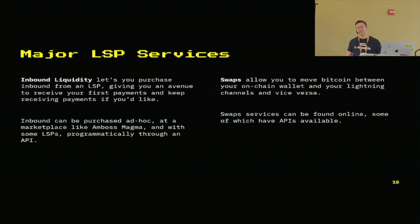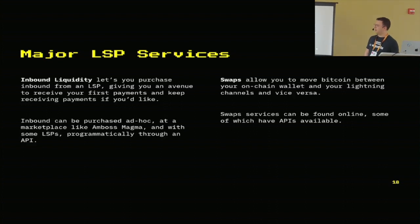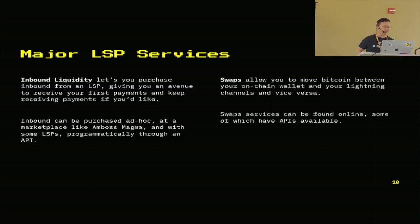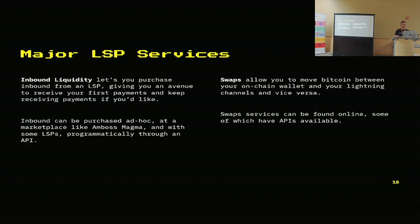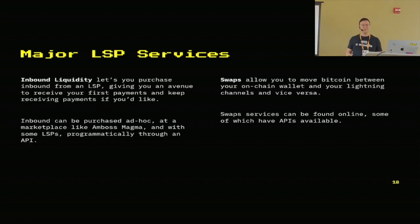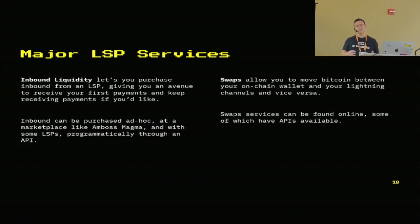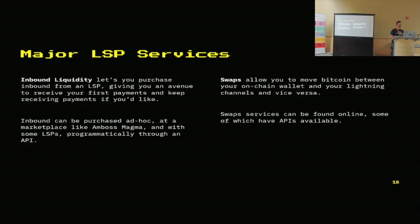These are the major LSP services. Inbound liquidity — basically you buying a channel from an LSP — the value is that the channel has all the balance on the LSP side, meaning you're able to receive payments right off the bat. Inbound can be purchased ad hoc, found on marketplaces like Amboss Magma, or programmatically requested through an API. The other major LSP service is swaps, which allow you to move Bitcoin from your on-chain wallet to Lightning and vice versa. There's Loop, Bolts, and a few ways to do this.